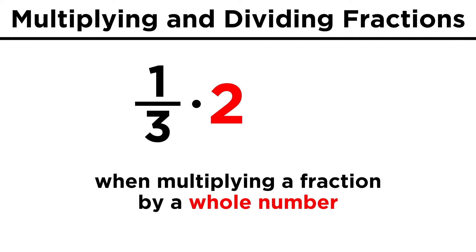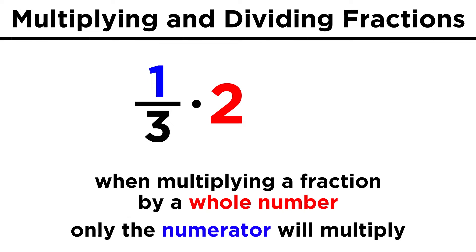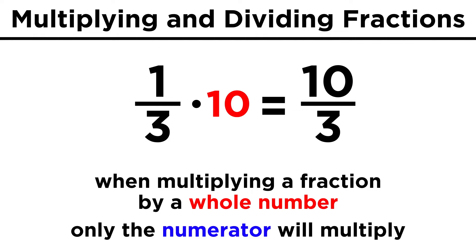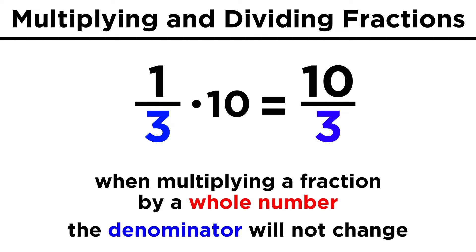Take one third. If we multiply this by two, then the whole number will multiply the numerator only. Two times one is two, so we get two thirds. If it was a ten, we would get ten thirds. The denominator will not change, because it is telling us the magnitude of the fraction, not how many there are.